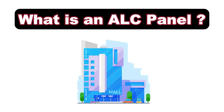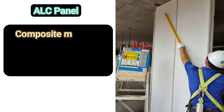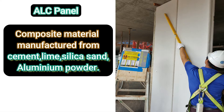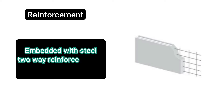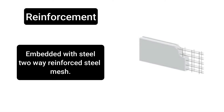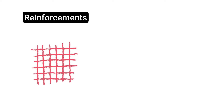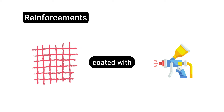What is an ALC Panel? ALC Panel is a composite material manufactured from cement, lime, silica, sand and dosed with aluminum powder. They are embedded with a steel two-way reinforced mesh. They can be single layered or they can be double layered, as shown in this picture. The reinforcement meshes are coated with anti-rust coatings.